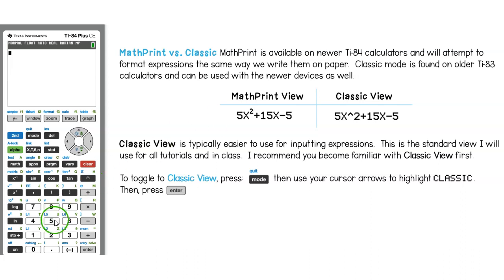Here's an example. If I type 5x to the second power plus 15x minus 5, notice that with MathPrint enabled, the superscript for the exponent notation is small print similar to the way that we write it.